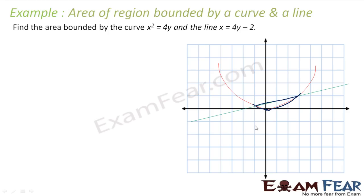Finding this area is not that simple, because I cannot integrate with respect to x simply to get this area — this is not a straight line. What I can do is divide this into two parts: area 1 and area 2. So the required total area is nothing but A1 plus A2.